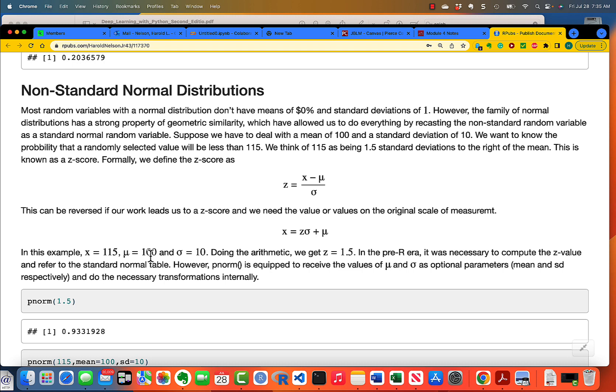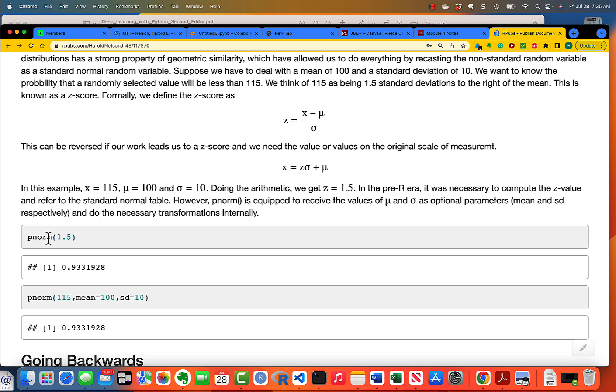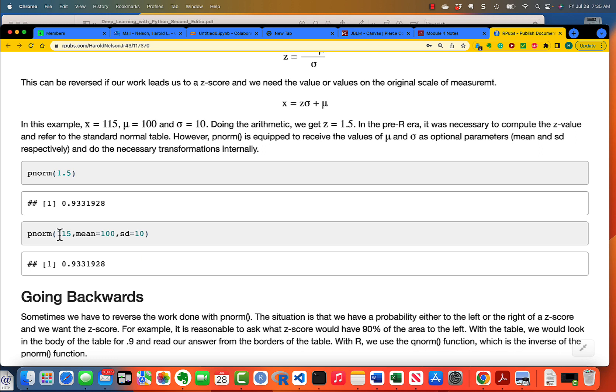So here's an example. If I have a mean of 100 and a standard deviation of 10, and I have an x value of 115, when you do a z-score, you get 1.5. And what we would do is go back and calculate the p-norm of 1.5. Actually, in the modern era with computers, we take the p-norm of 115 and just specify that the mean is 100 and the standard deviation is 10.